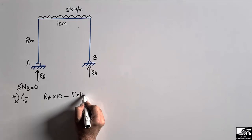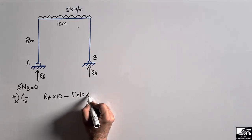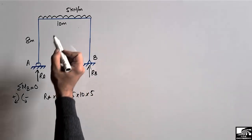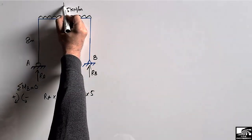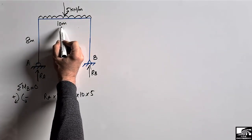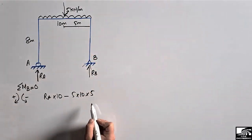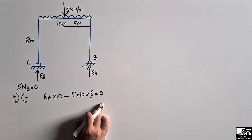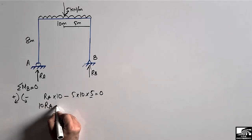The distributed load term is minus 5 into 10, multiplied by the moment arm. Since it is a uniformly distributed load, the equivalent concentrated load acts at the center, so the moment arm is 10 divided by 2, which equals 5 meters. That's why we write 5 here. The full equation is: R_A × 10 − 5 × 10 × 5 = 0.